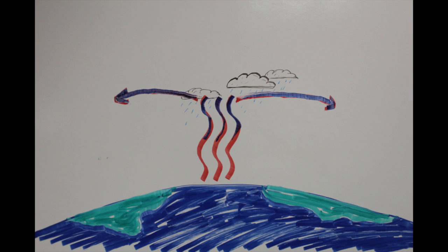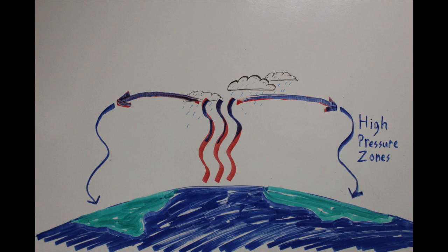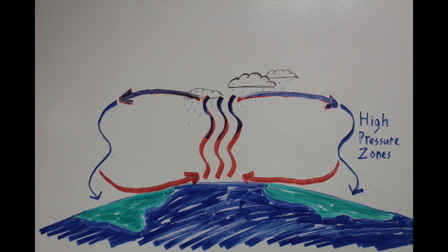Pretty soon, the cooling air moving away from the equator becomes cool enough to sink down again, creating what we call a high-pressure zone. As it lowers and gets closer to the Earth, it begins to heat up again and begins a return journey to the center of the tropics to do the cycle all over again.